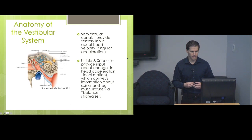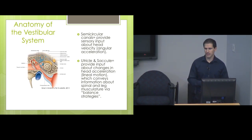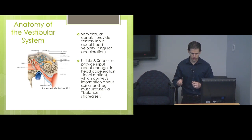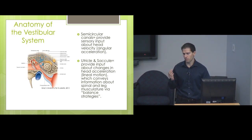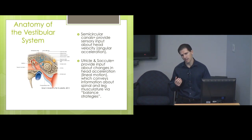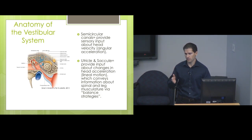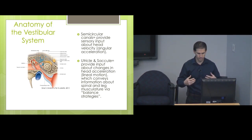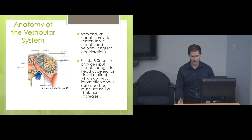The semicircular canals provide input directly to our visual control nuclei and affect visual fixation based on angular acceleration of the head — turning left to right, up and down, side to side. There are three canals: the anterior, posterior, and horizontal canal, giving us a 3D awareness of where we are in space.